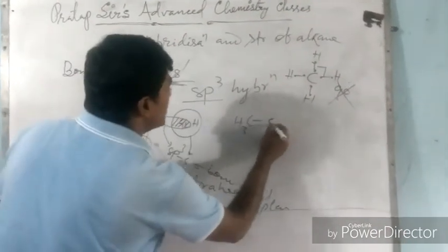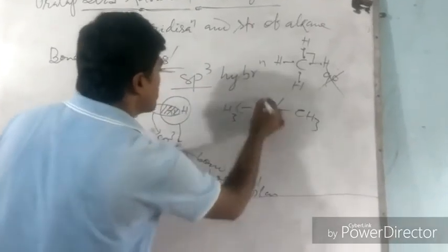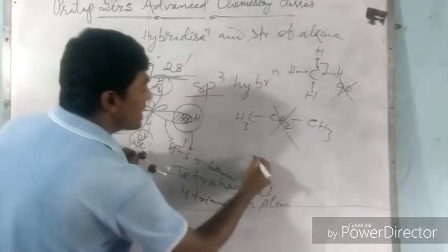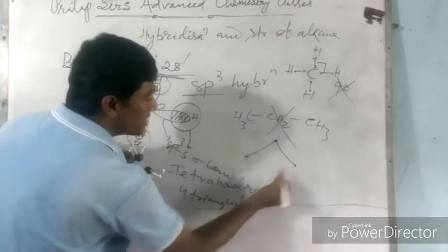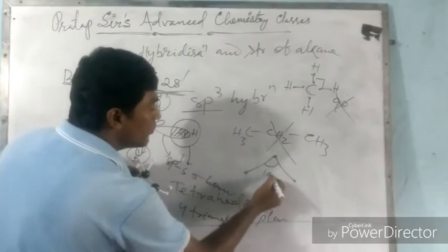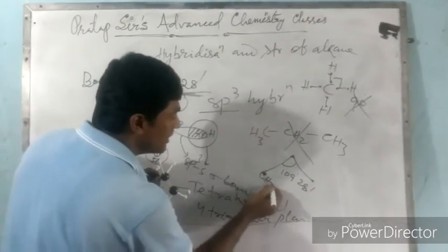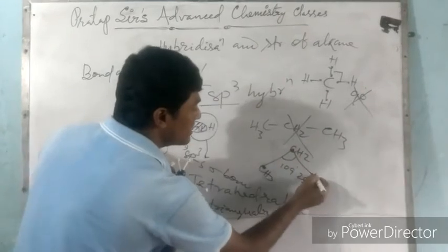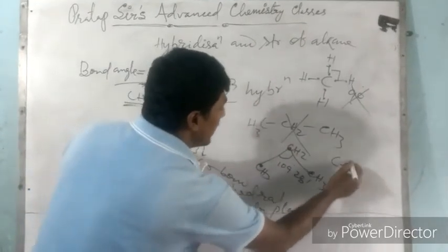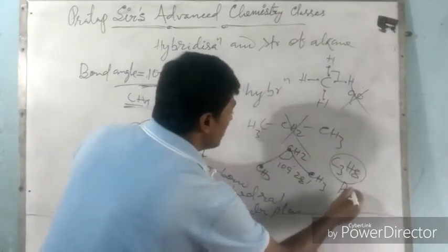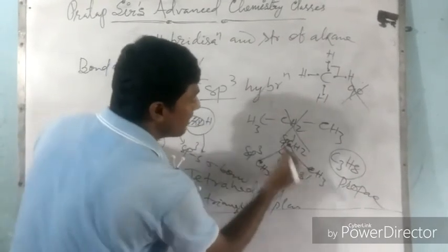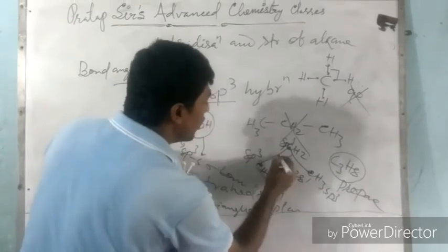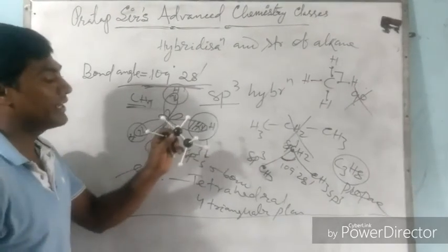We write CH3–CH2–CH3 for simplicity, but the actual structure is not linear — it is a bond line structure showing a zigzag: one carbon, another carbon, another carbon, maintaining 109 degrees 28 minutes. So CH3 — CH2 — CH3, giving C3H8 as the molecular formula for propane. Every carbon is sp3 hybridized, has four bonds, and all bond angles are 109 degrees 28 minutes.